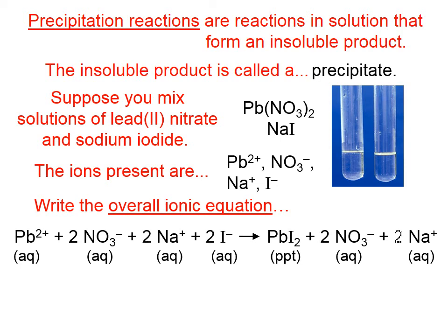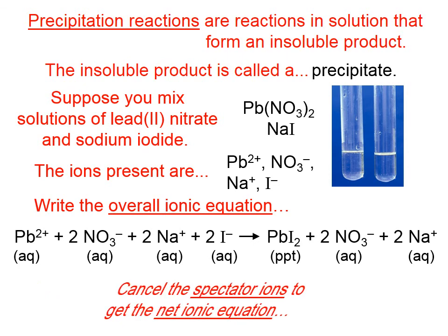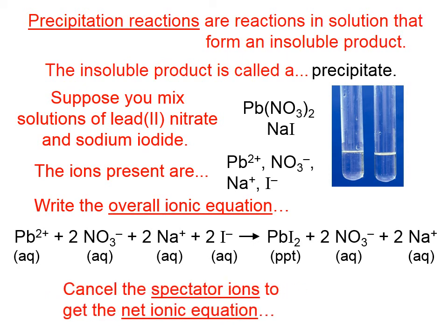If we take the time to balance that equation, then cancel the spectator ions, we get the net ionic equation. The sodium ions — 2 Na⁺ on each side — are spectator ions. The 2 nitrate ions on each side are also spectator ions. Canceling those gives us the net ionic equation.